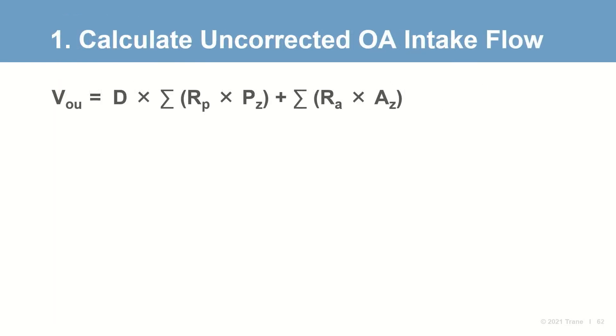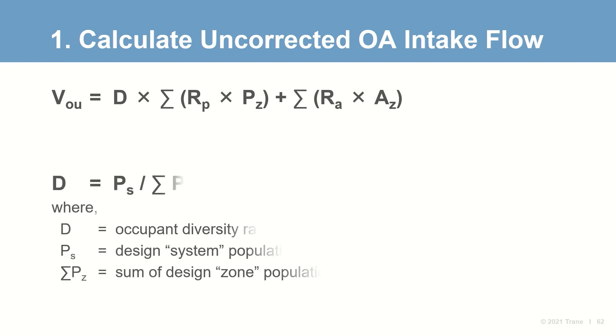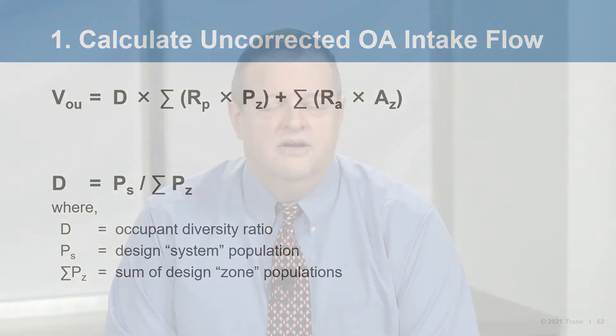For step one, the equation for V-sub-OU is basically the sum of the breathing zone ventilation rates, with one addition: a factor D, the Occupant Diversity Ratio, multiplied by the people-based component of the ventilation rate. Mathematically, it's the ratio of the expected design system population divided by the sum of the design populations for all zones. For example, in our office building, a person is expected to be in their office or cubicle, or in a conference room — not both zones simultaneously.